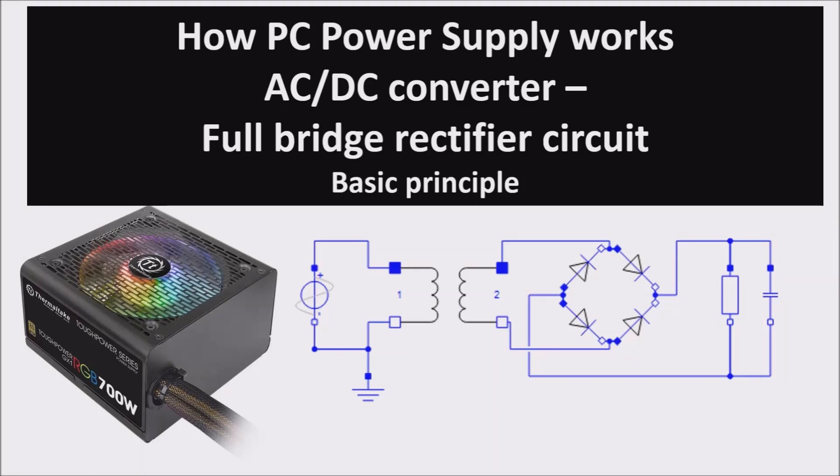In this circuit we explain the working principle of a PC power supply which has to transform a 240V alternating voltage to a 12V direct voltage. We see a basic circuit which can do it, the full bridge rectifier.